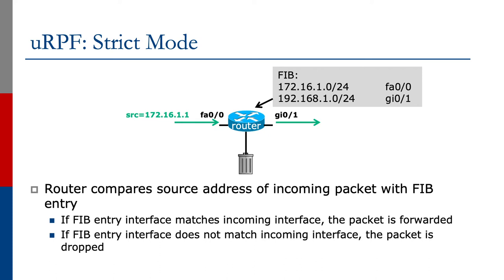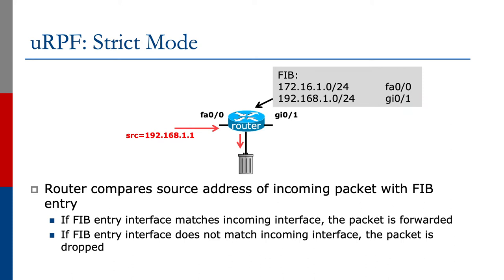The router has a FIB entry for the 172.16.1.0/24 network. Because the entry exists in the FIB and it is a valid source, the router will forward the packet out of the Gigabit0/1 interface. However, if there's an incoming packet with source address 192.168.1.1, the router checks the FIB and sees that the 192.168.1.0/24 network is reachable out through Gigabit0/1 — not through FastEthernet0/0. So this is considered a fake source address; the FIB entry does not match the incoming interface and the packet is dropped.